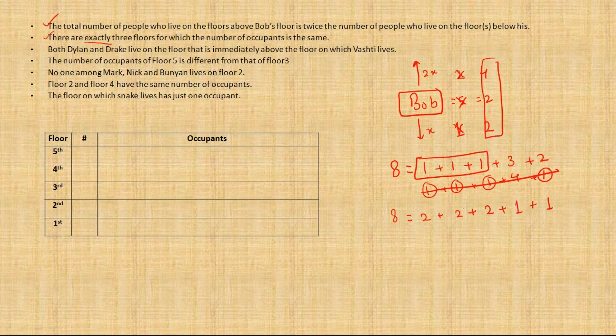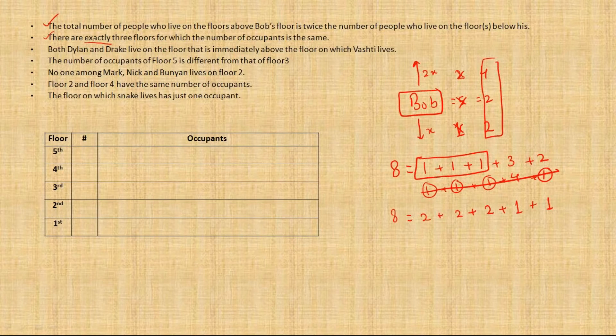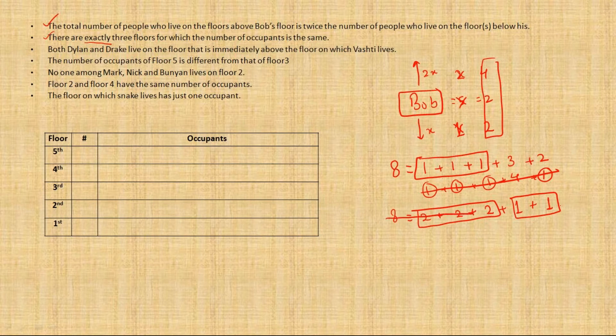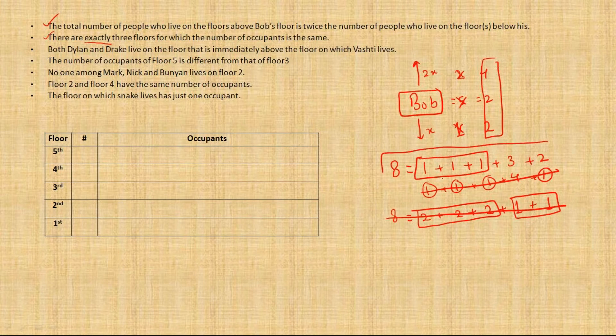Now people say why can't this also be an equally good arrangement? But then that is the time when I have to make you realize the importance of the word exactly. When they say there are exactly 3 floors for which the number of occupants is same, that means that 3 and only 3 floors have the same number. But here you have another pair of floors who have the exactly same number of occupants. So that should not happen. When they say exactly, they mean neither more nor less. So when they say 3, then only 3 floors have the same number of occupants. The other pair or other triplet is not possible. So on this note I make this 1+1+1+3+2 as my final arrangement.